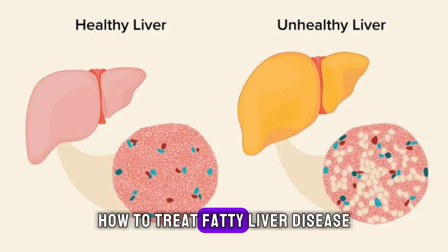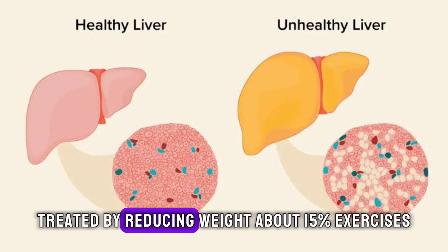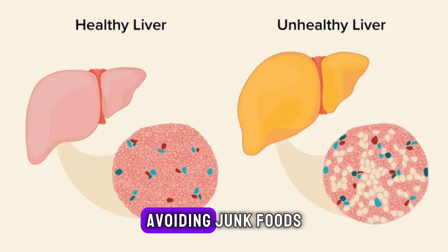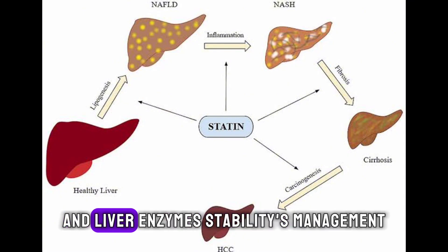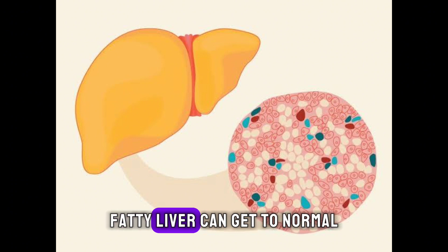How to treat fatty liver disease? Fatty liver can be completely treated by reducing weight by about 15%, regular exercise, avoiding junk foods and fats, cholesterol-lowering medications, and liver enzyme stabilization management. By following these steps, fatty liver can return to normal.